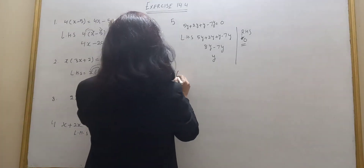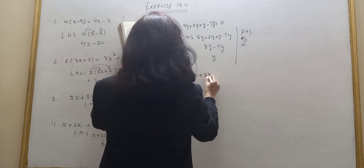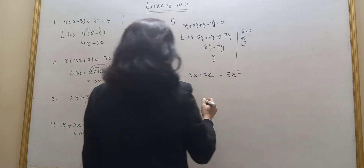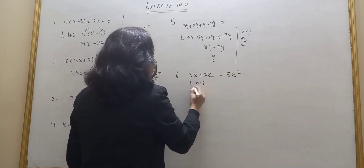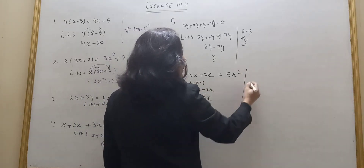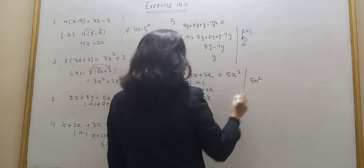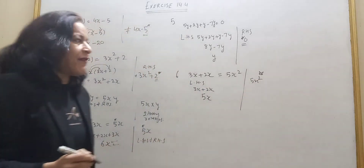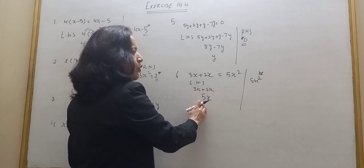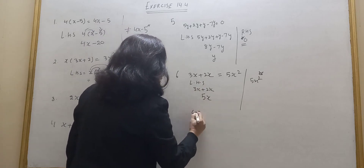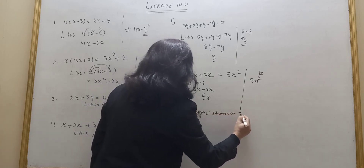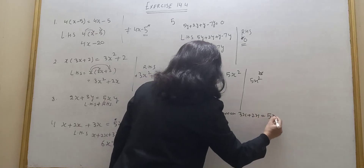Question number 6: 3x plus 2x. This is the left hand side. Right hand side is 5x². Let's check. Left hand side: 3x plus 2x is 5x. But we have given in the right hand side 5x². Here is the error — it should be 5x, not 5x². So the correct statement is 3x plus 2x is equal to 5x, not 5x².